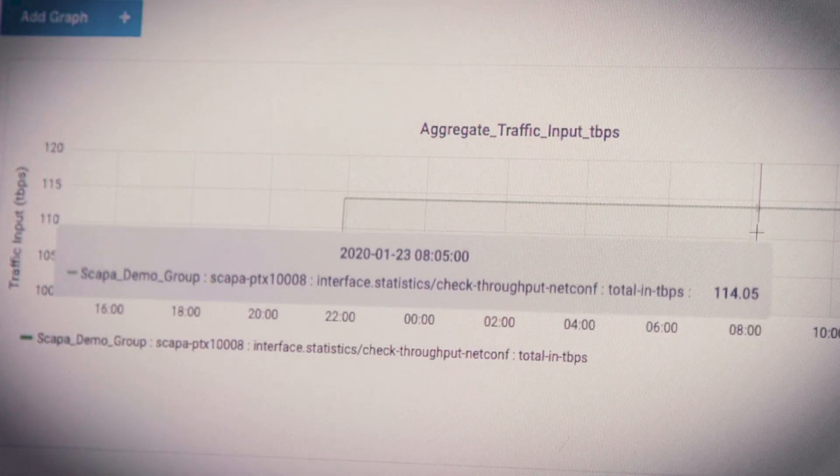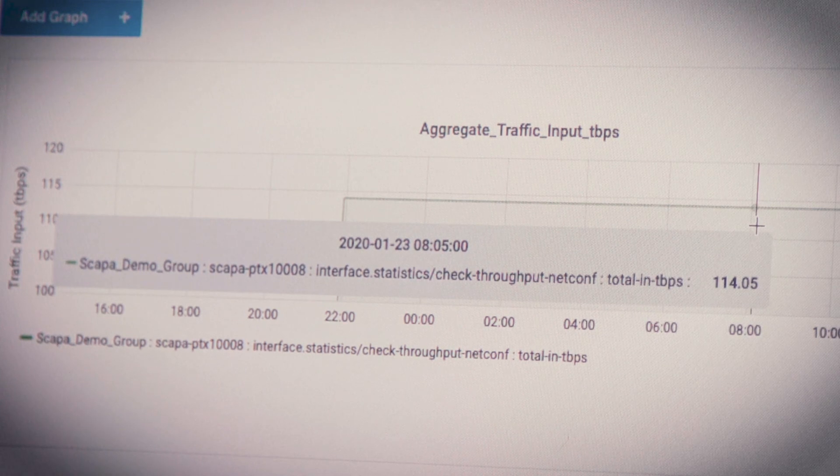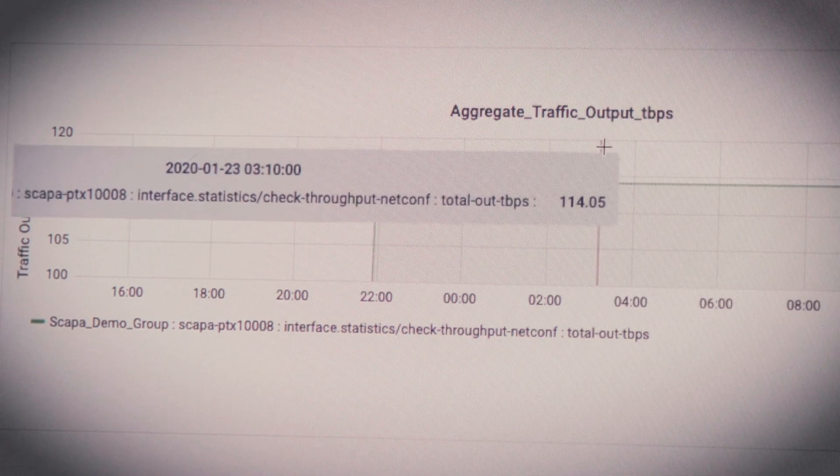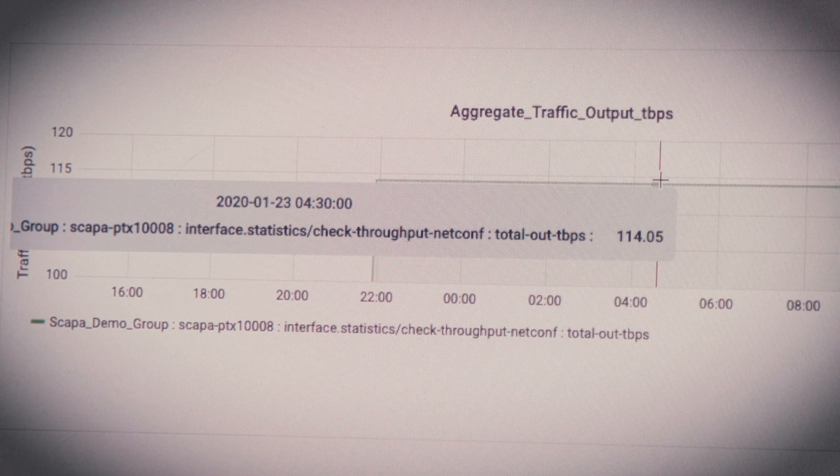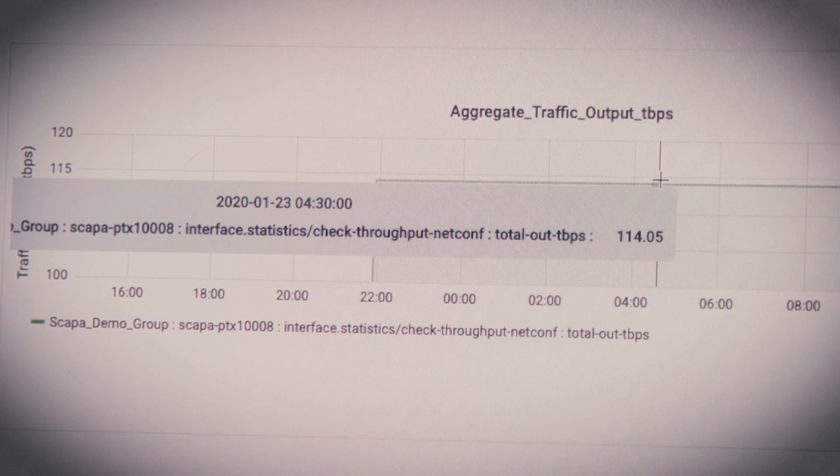The graph here on the left is the total input traffic. The graph on the right is the total output traffic. So essentially the input graph and the output graph look exactly the same. Where is the graph that shows the number of packets that are dropped? There is zero packet drop. No packet drop.